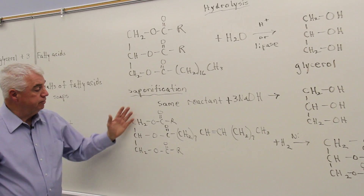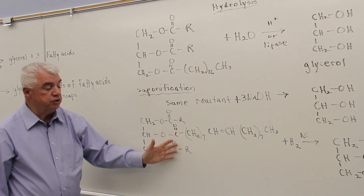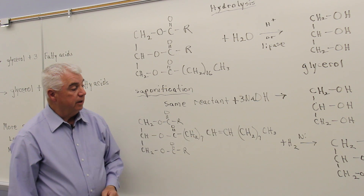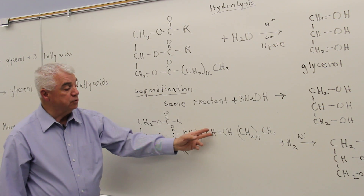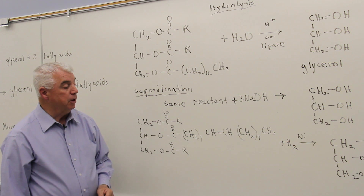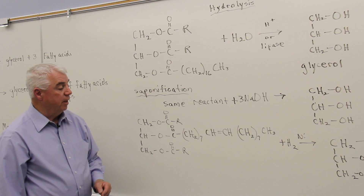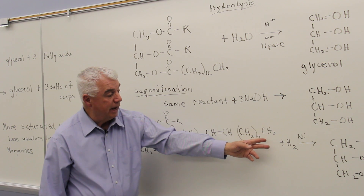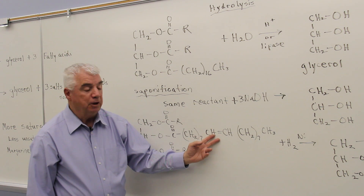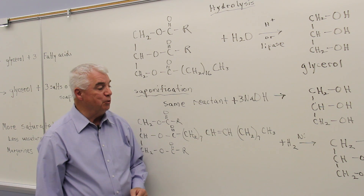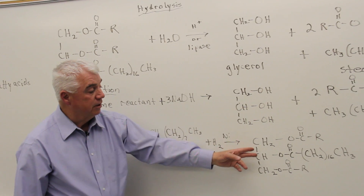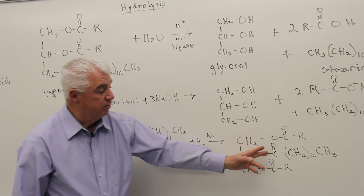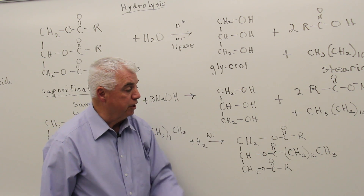For the third reaction, I've changed the structure a little bit. In the middle position, I've shown a specific long chain fatty acid that has one carbon-carbon double bond — this is oleic acid. Oleic acid can react with hydrogen; this carbon-carbon double bond is going to pick up the two H's, with nickel as the catalyst. As this double bond disappears, we'll have 16 CH₂ groups in a row again.